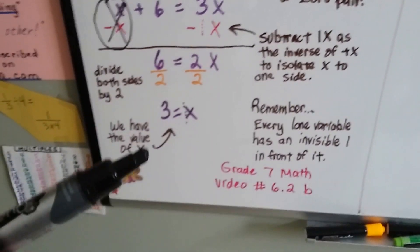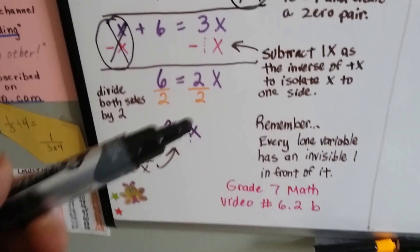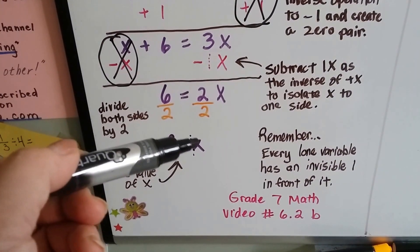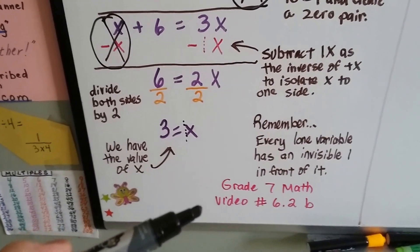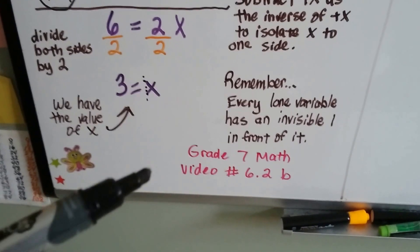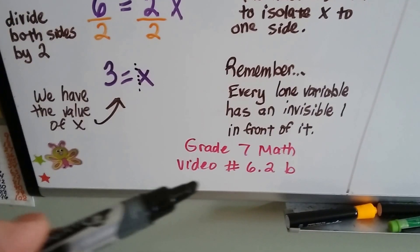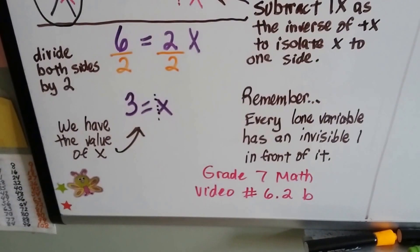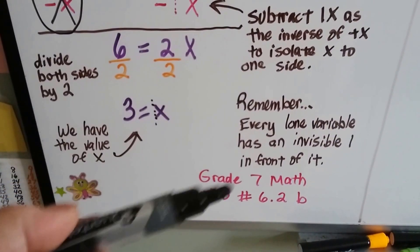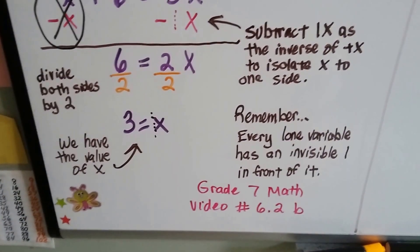Remember that lone variable. Whenever there's a variable by itself, it's got an invisible 1 in front of it. Okay? If you're really confused about that, I really advise you to go back to grade 7 math, and look at the video 6.2b, and it explains about that invisible 1. If you continue on and don't understand that, you're going to get into some trouble, because we're going to use that invisible 1 many times coming up now.